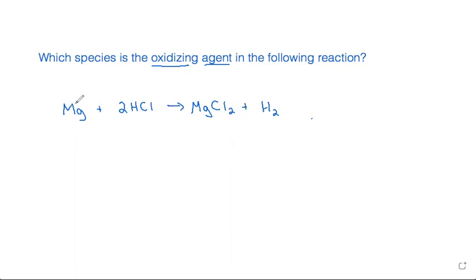So magnesium, since it's by itself in its elemental form, every time you have an elemental form the oxidation number is zero. So I'll write that above the Mg which represents magnesium.